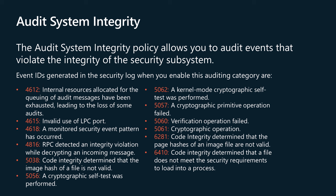The following events will be enabled if you configure auditing through this policy. 4612: internal resources allocated for the queuing of audit messages have been exhausted, leading to the loss of some audits. 4615: invalid use of LPC port. 4618: a monitored security event pattern has occurred. 4816: RPC detected an integrity violation while decrypting an incoming message. 5038: code integrity determined that the image hash of a file is not valid. 5056: a cryptographic self-test was performed. 5062: a kernel mode cryptographic self-test was performed. 5057: a cryptographic primitive operation failed. 5060: verification operation failed. 5061: cryptographic operation. 6281: code integrity determined that the page hashes of an image file are not valid. 6410: code integrity determined that a file does not meet the security requirements to load into a process.